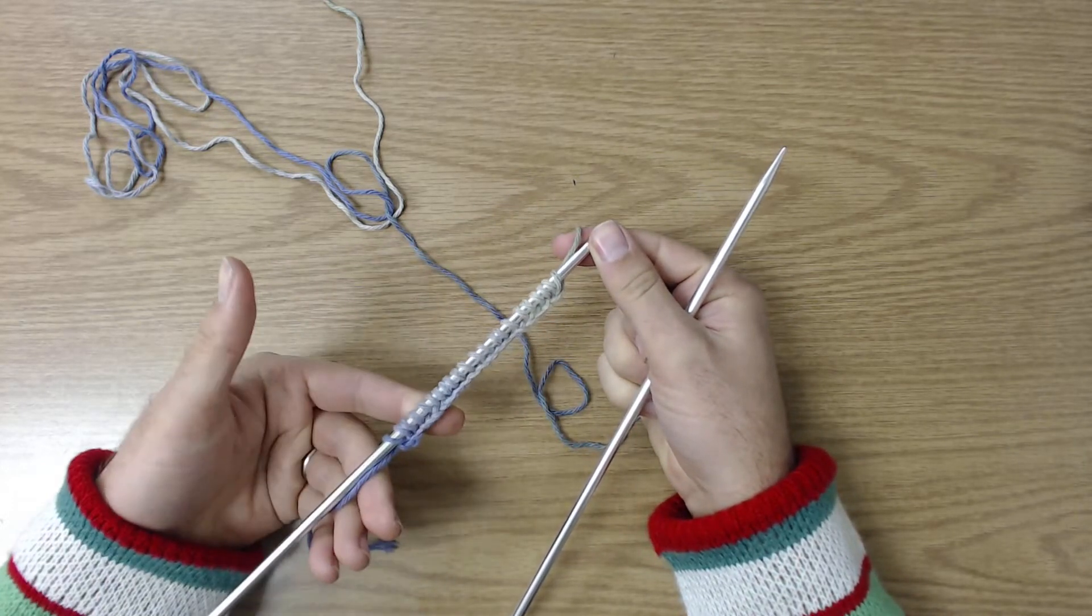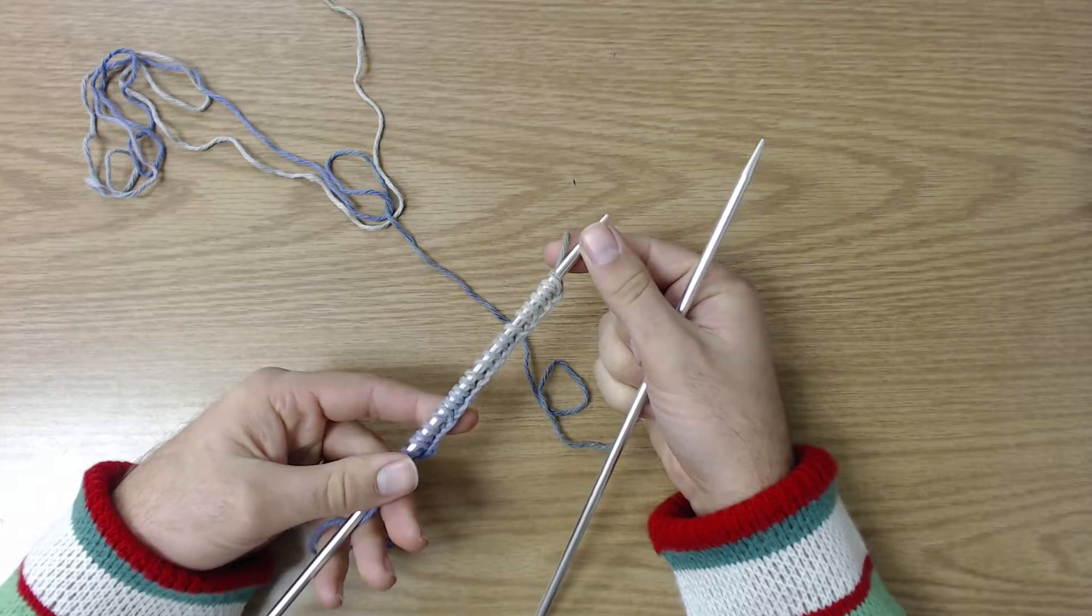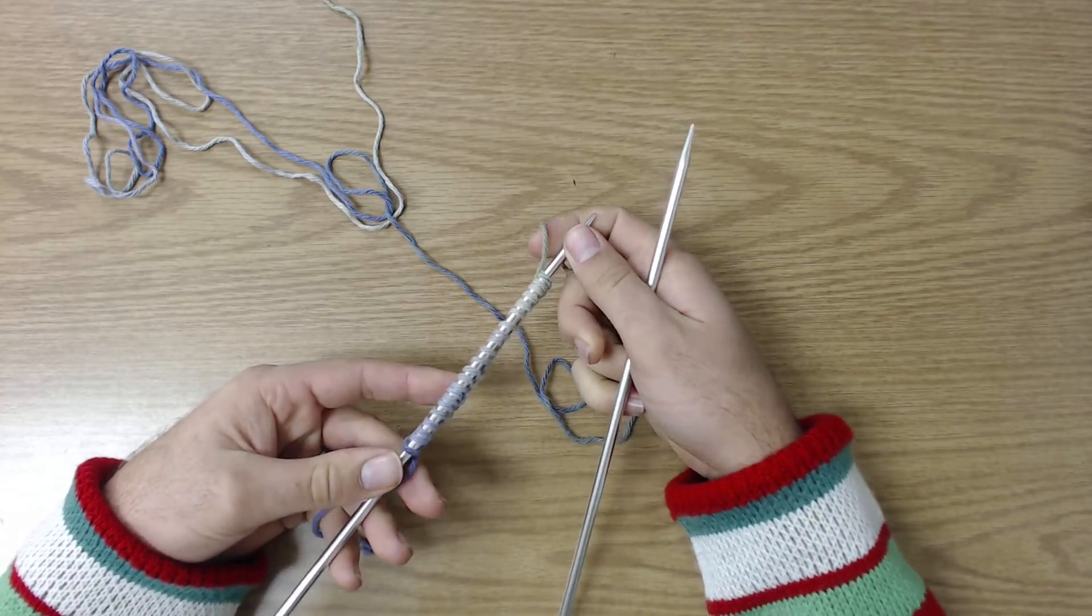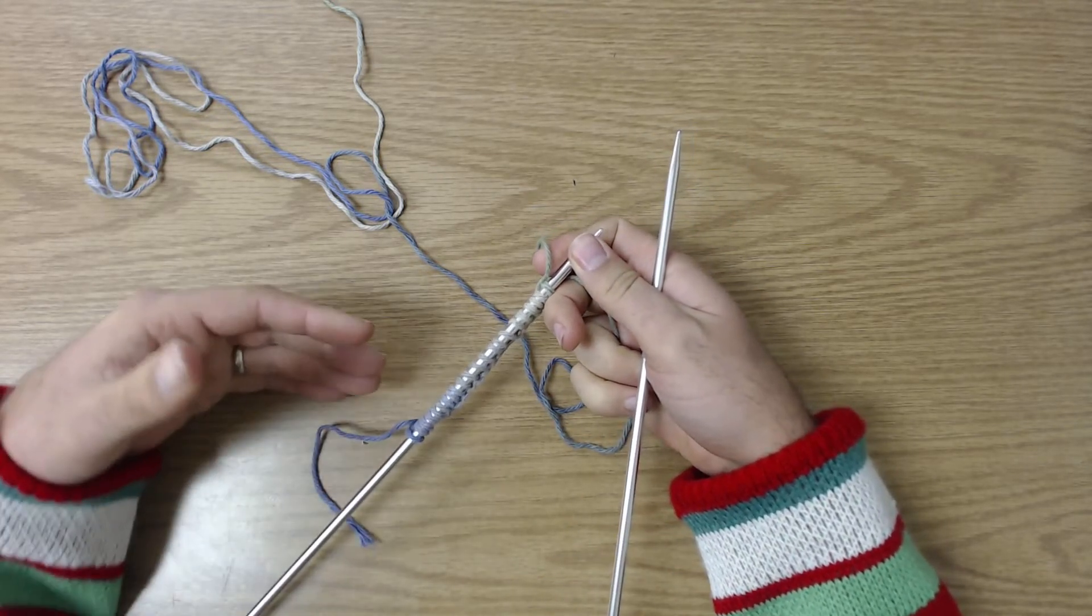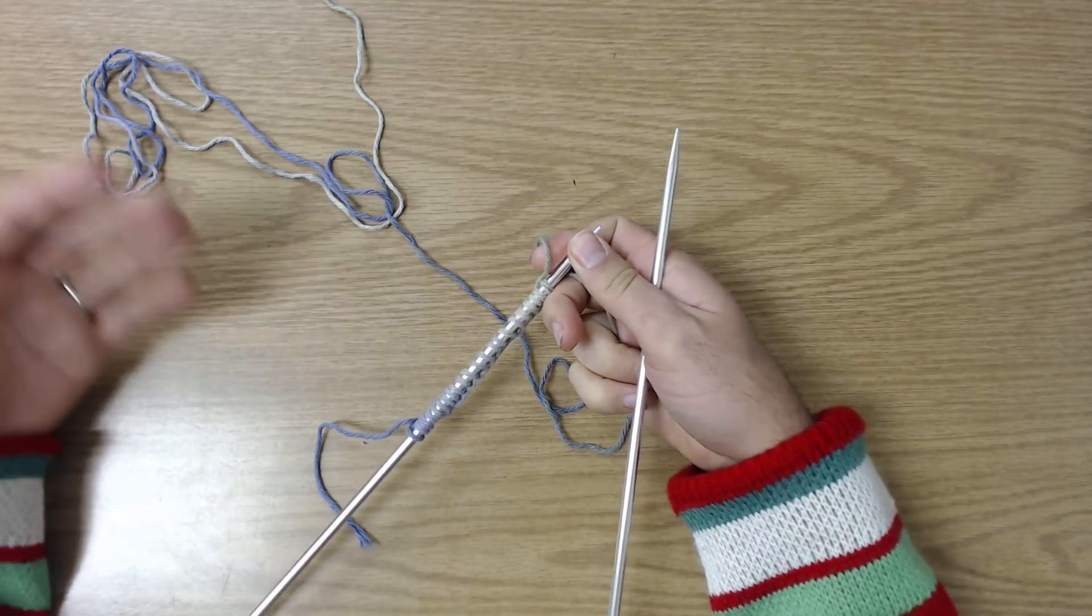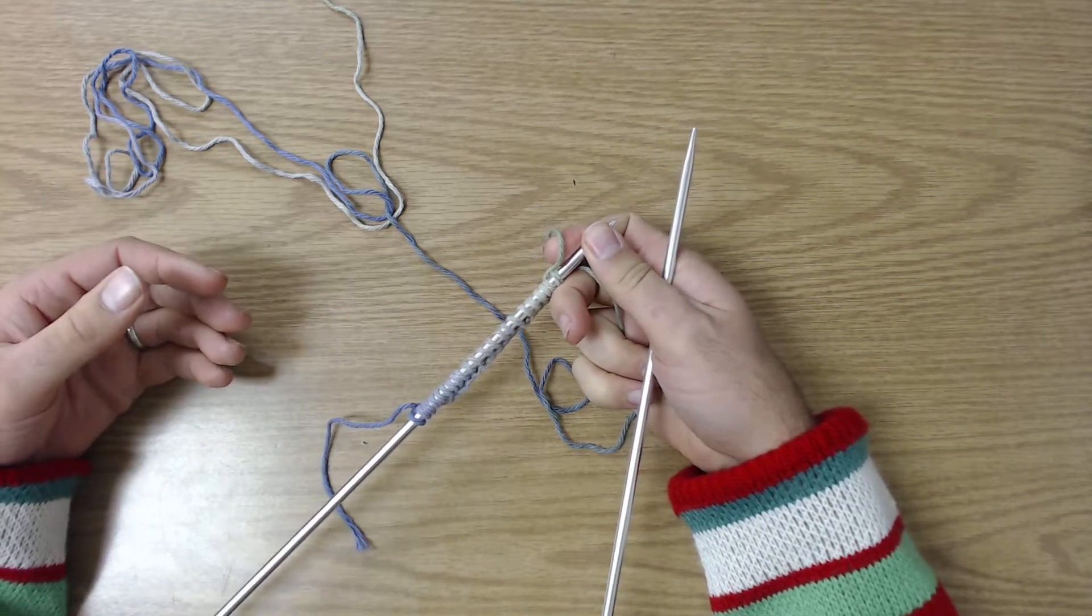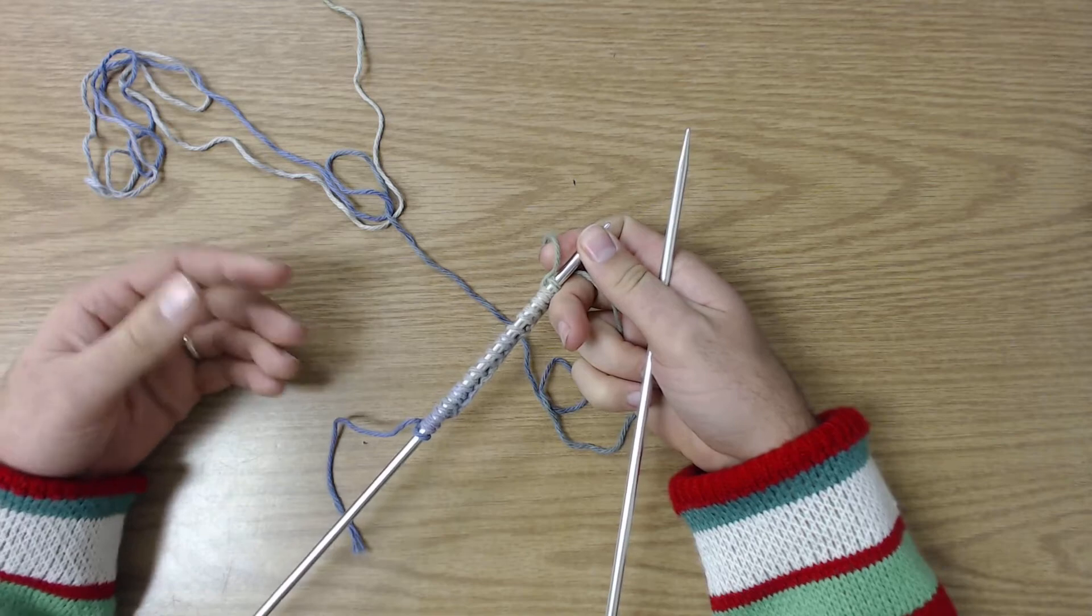So we now have a bunch of loops on our needles. I always suggest that you count them periodically so you know how many you have, so you know if you're starting to lose them or gain them. Some people favor one more than the other. I tend to lose them, so that's something to keep in mind.